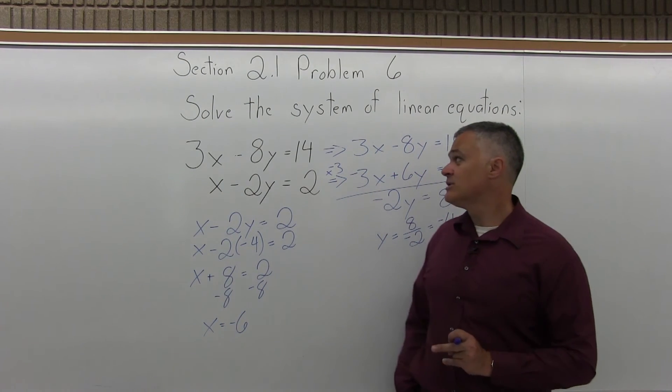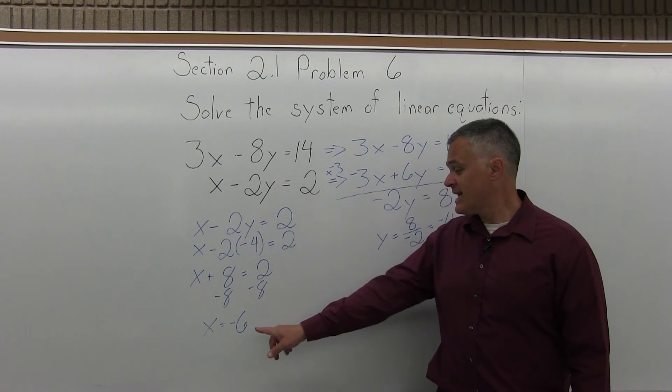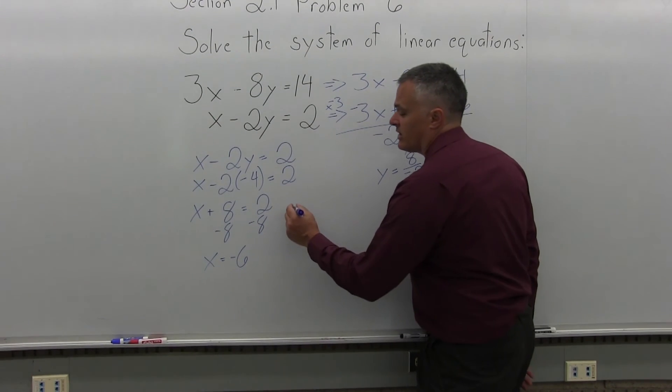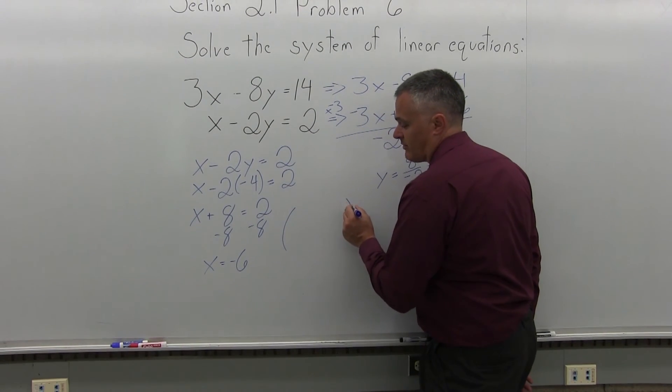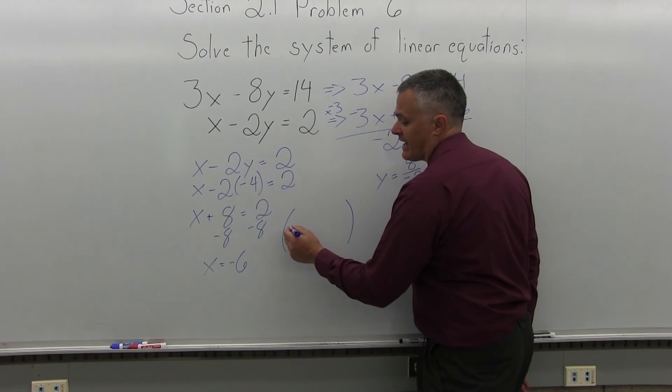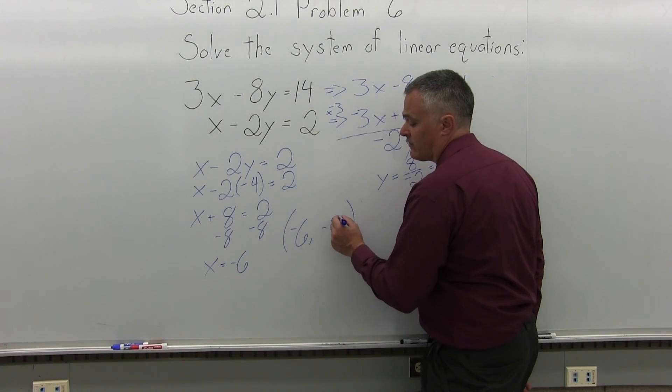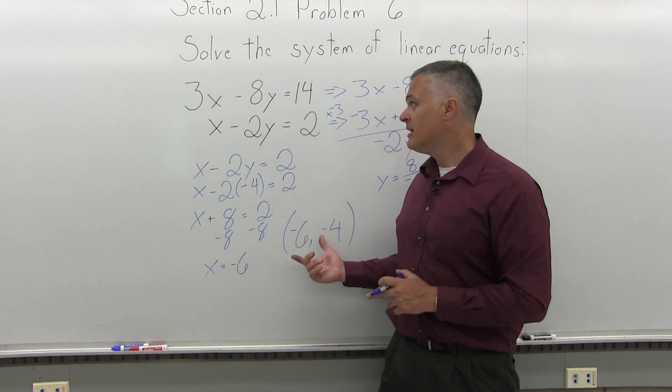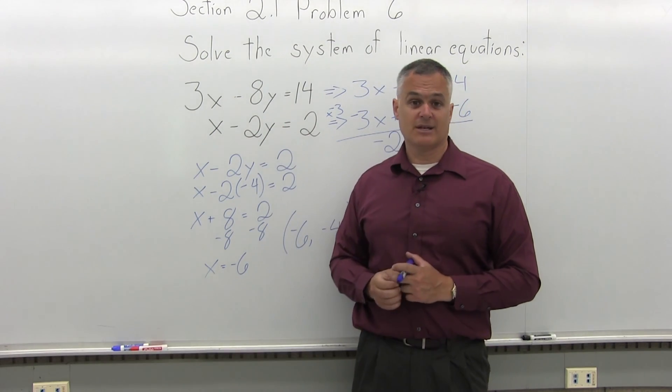So, now, the solution to this system of linear equations is x is negative 6 and y is negative 4. And, if you like, you can write that as a point where they would intersect on a graph. The x-coordinate would be negative 6. The y-coordinate would be negative 4. So, if you drew the graph, that's where the two lines would intersect. That point is on both lines at the same time.